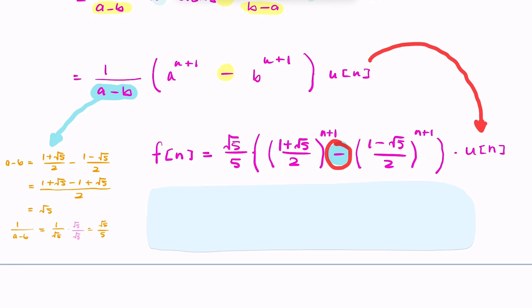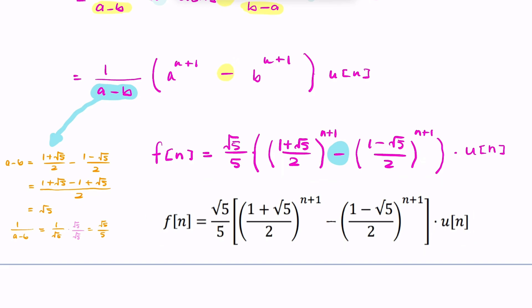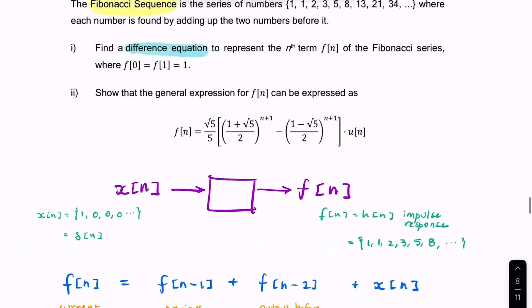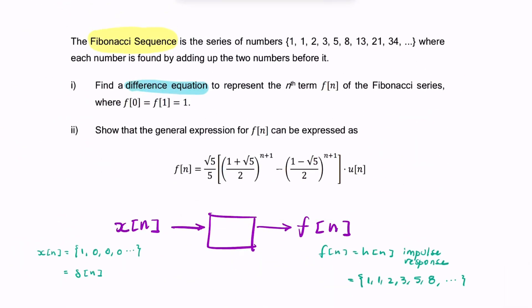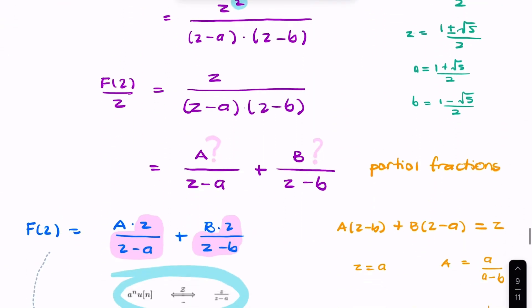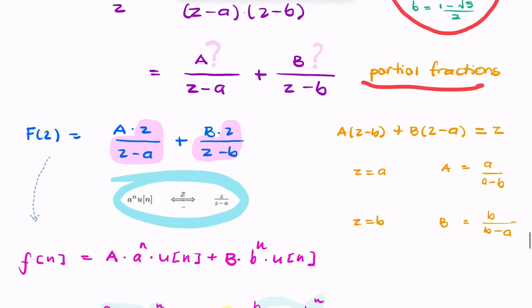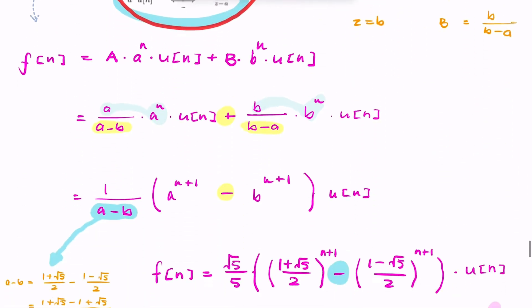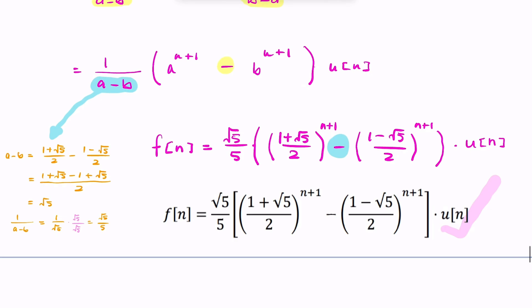Looking closely, that matches exactly what the question asked us to find. The trick was to use the Z-transform and the inverse Z-transform. There was some partial fractions, factorization, and algebraic manipulation involved, but that's how we find the closed-form expression for the nth term of the Fibonacci sequence.